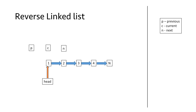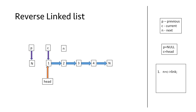For the first node containing value 1, there is no previous node, so pointer p will point to null and the current pointer c will point to node 1. We point the next pointer n to the next node of our current node, which is 2, by writing n equal to the link part of the current node. Then we perform the reverse operation: we point the first node to the previous node (null) by writing the link part of c equal to p, making node 1 point to null.